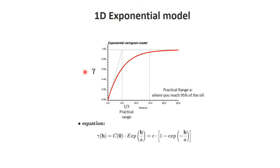The 1D exponential model has behavior that is exponentially increasing. Unlike the spherical model, it never levels off — it only reaches the sill asymptotically. Because of noise and sampling variance in practice, we define what is called the practical range at 95%. So when A is 15, you would be around the area where it's essentially leveled off.